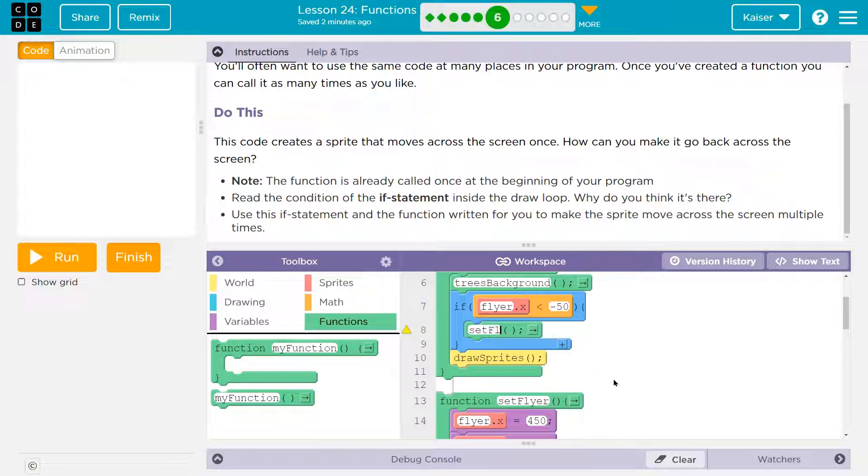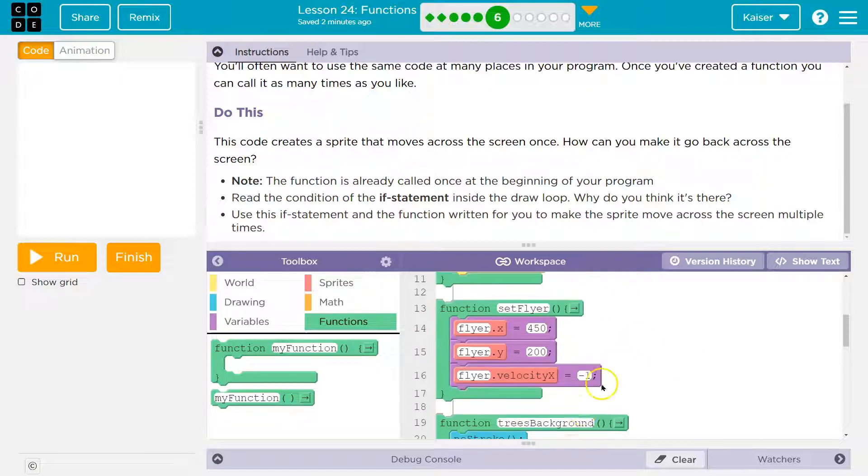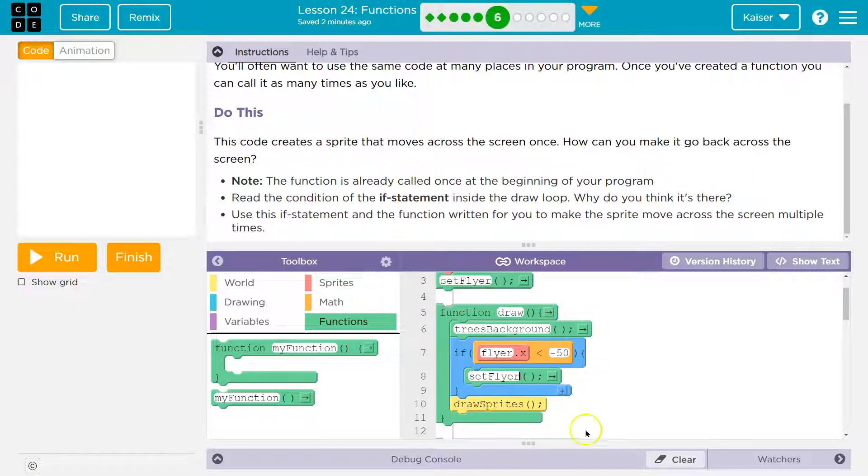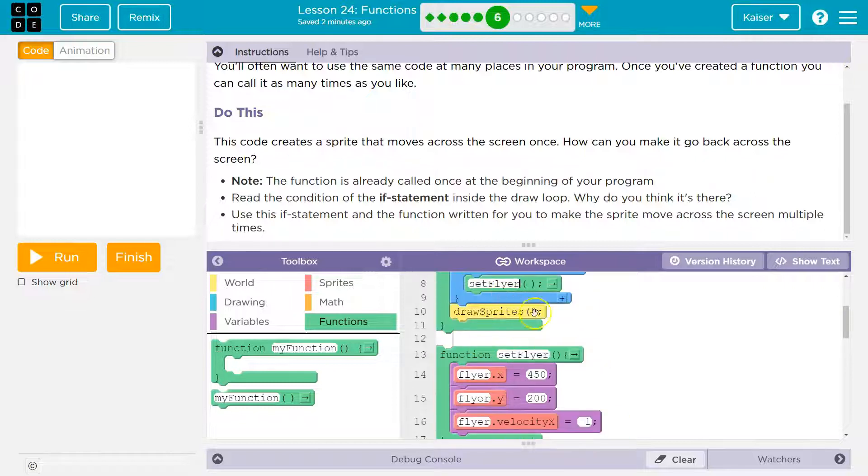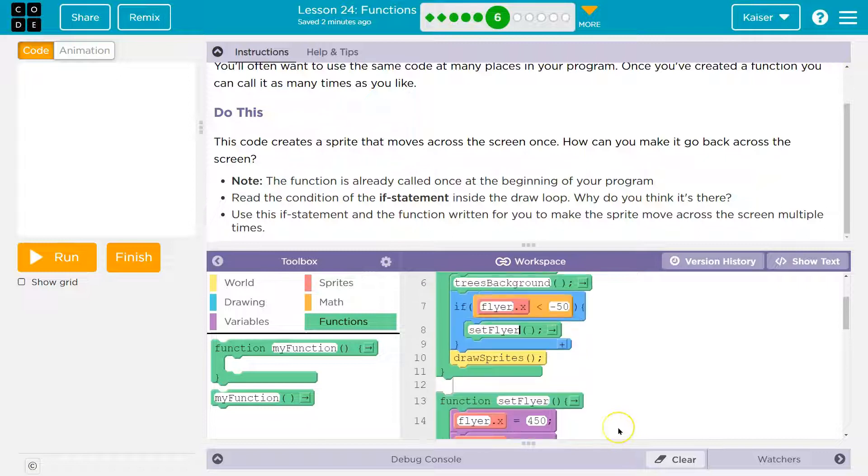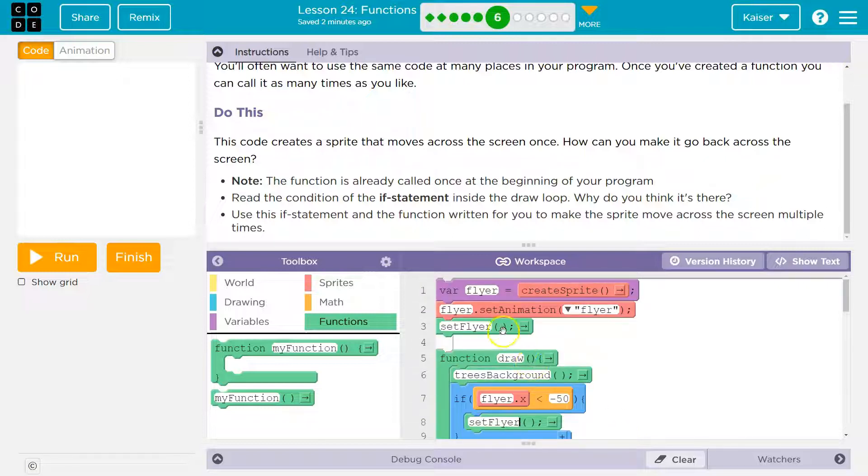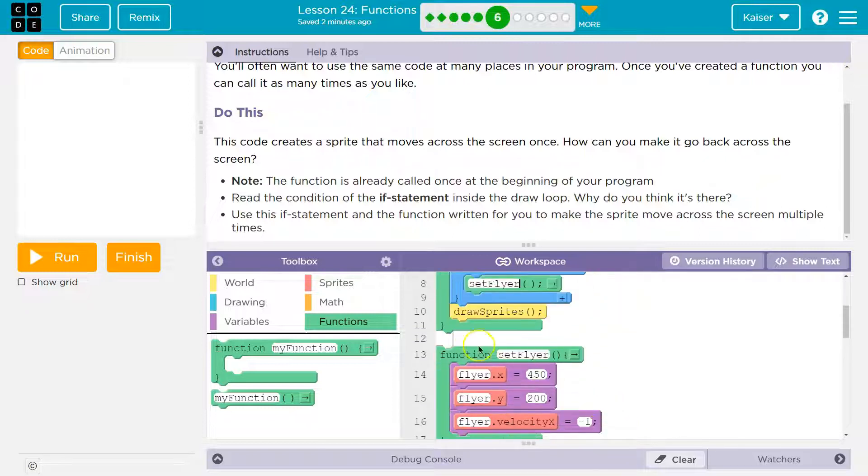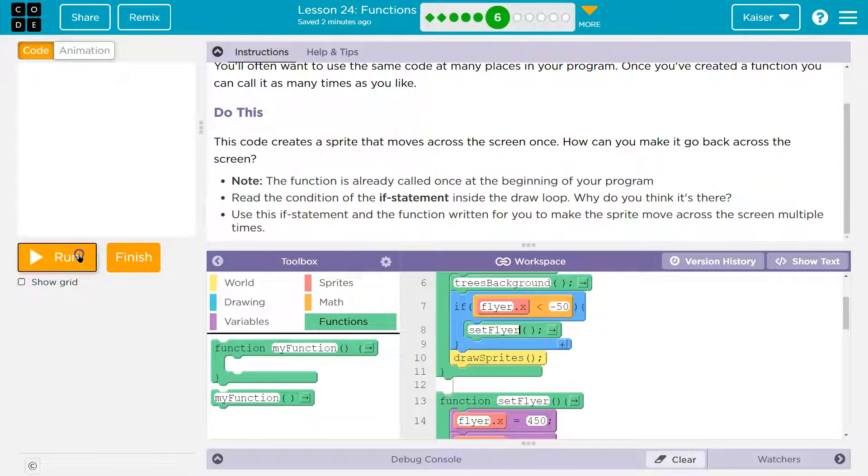And notice we can do this. Normally, I would have to write all of this code up here. And then I'd have to write the exact same stuff right here if I needed to reset the flyer. Now I have a function so I can just say the name of it and it will go find this block of code, run whatever's inside, go back and then just keep running like normal.